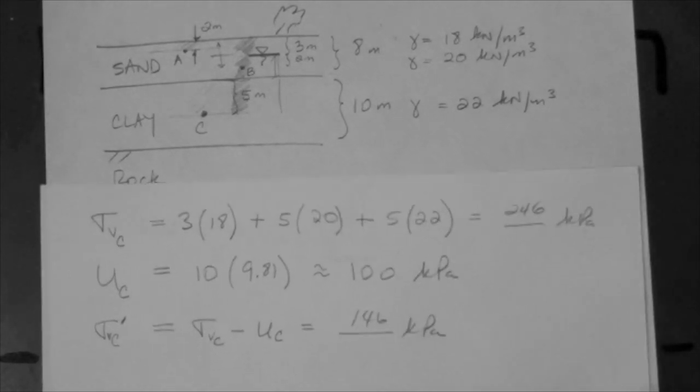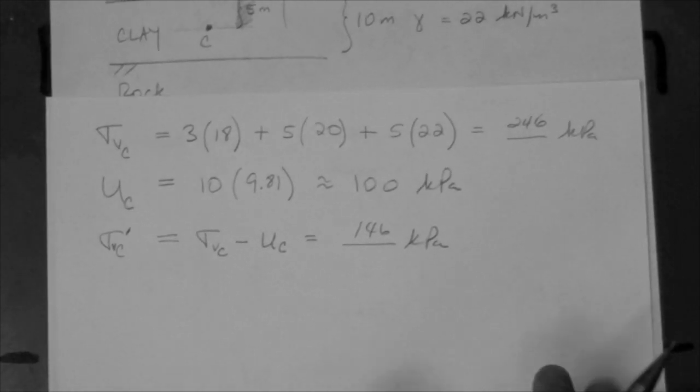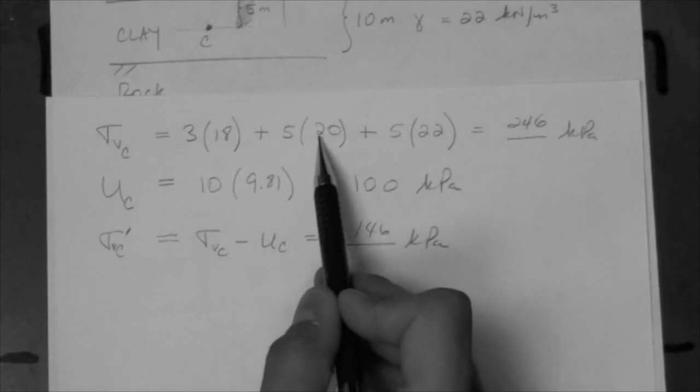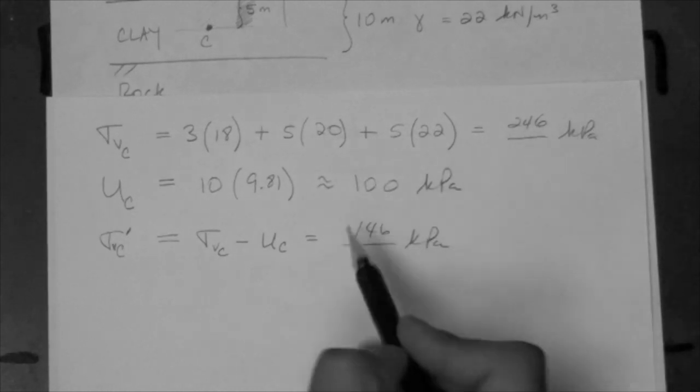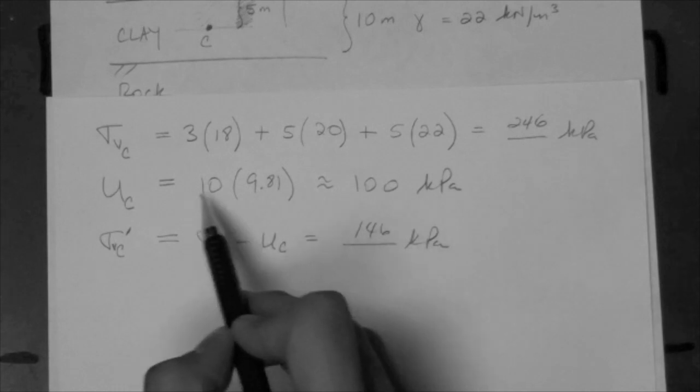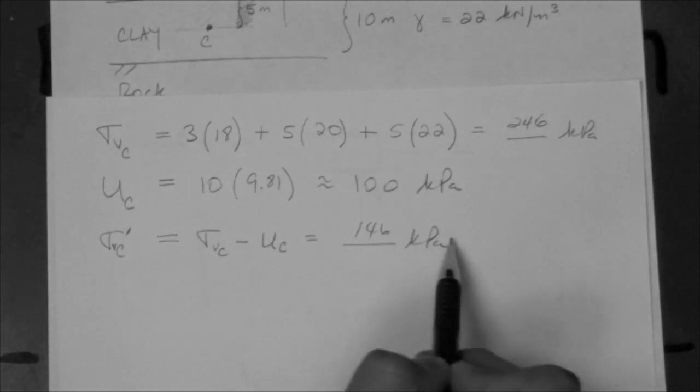Just for completeness, here are the numbers: 36 plus 100 plus 110, so we have 246. 246 minus 100 is 146 kPa. Of course, that's a unit of stress.